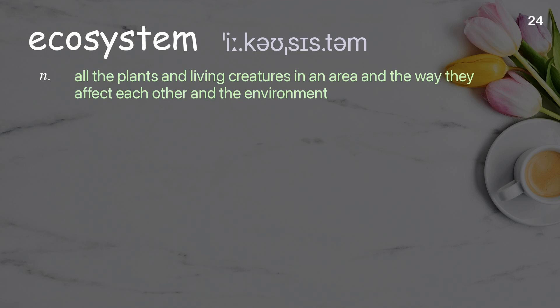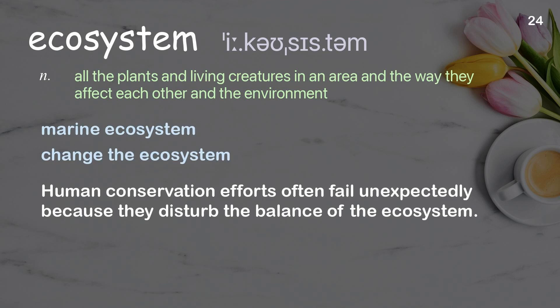Ecosystem: all the plants and living creatures in an area and the way they affect each other and the environment. Examples: Marine ecosystem. Change the ecosystem. Human conservation efforts often fail unexpectedly because they disturb the balance of the ecosystem.